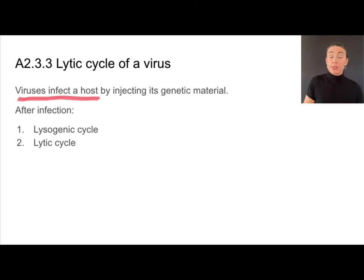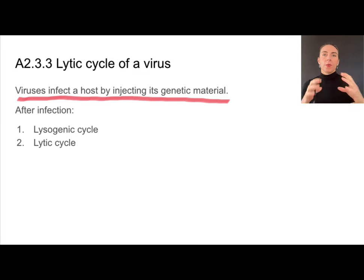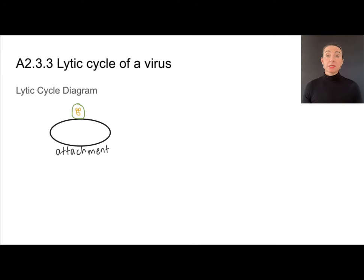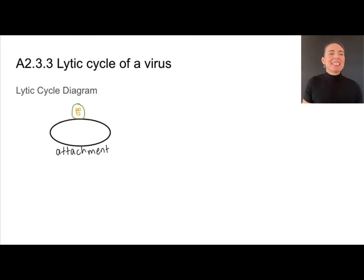Viruses infect a host by injecting their genetic material — whether that's DNA or RNA. What happens after that can vary. Viruses can either go through a lysogenic cycle or a lytic cycle. In the lytic cycle, the first step is that the virus has to attach to a cell. It has its protein capsid and genetic material, and attachment depends on protein compatibility.